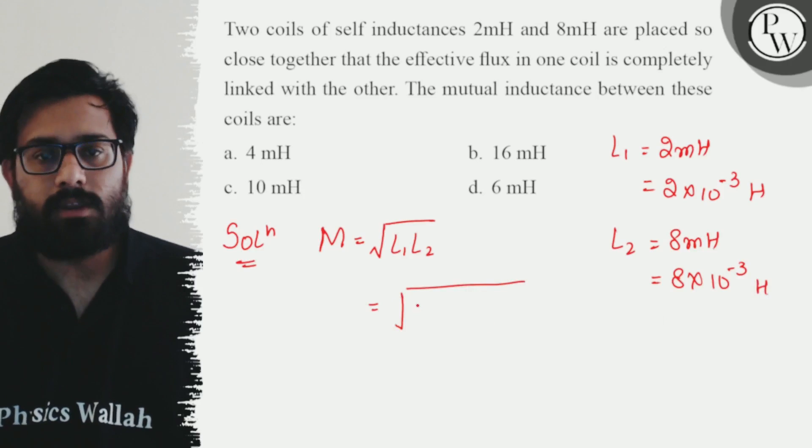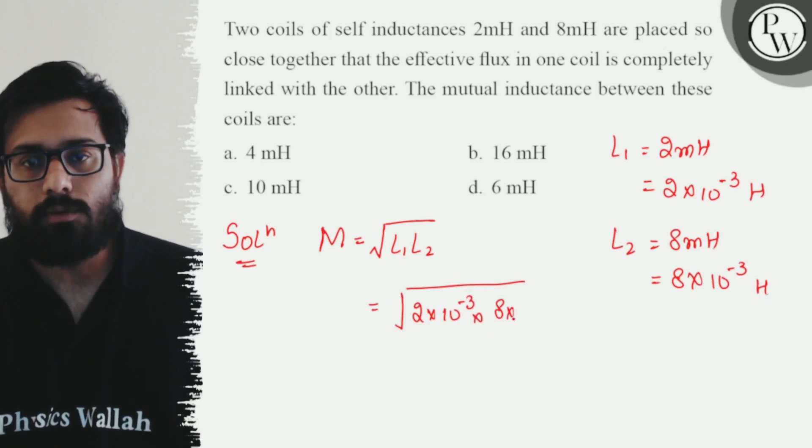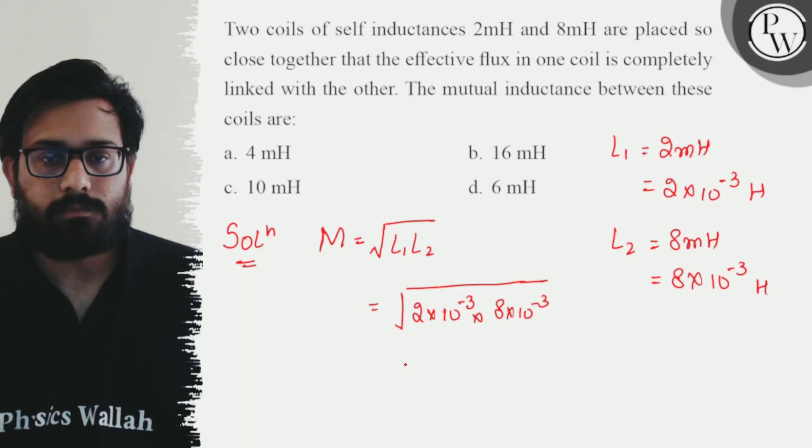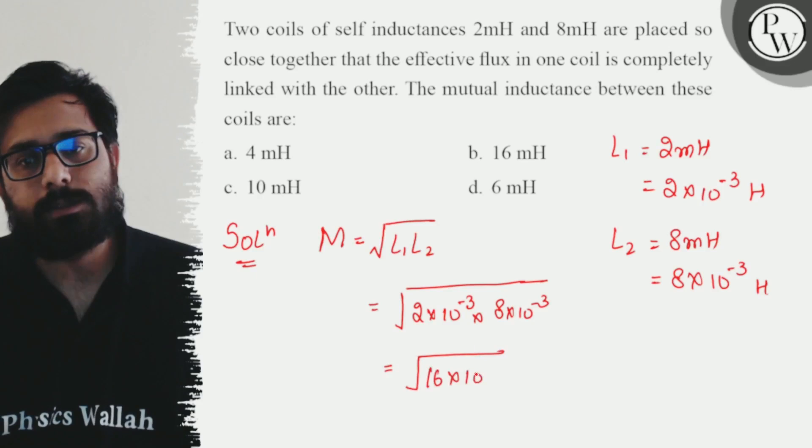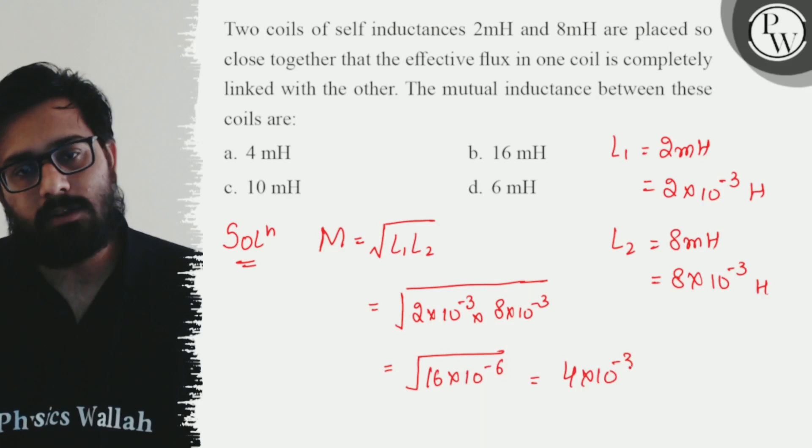Just put the values here, you get this value as 2×10^-3 × 8×10^-3. Solving it further, this comes out to be 16×10^-6. When it comes out of the square root, we get the value of 4×10^-3 Henry.